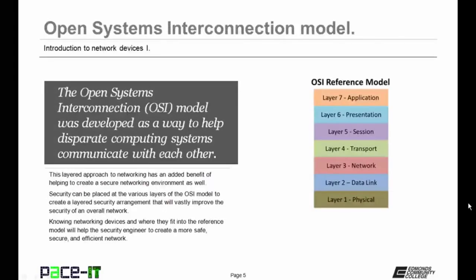The Open Systems Interconnection Model, or the OSI model, was developed as a way to help disparate computing systems communicate with each other. It created a seven-layer approach to networking. This layered approach not only allows those disparate systems to communicate with each other, but it has the added benefit of helping to create a secure networking environment as well. Security can be placed at the various levels of the OSI model to create a layered security arrangement that will vastly improve the security of an overall network. Knowing networking devices and where they fit into the reference model will help the security engineer to create a more safe, secure, and efficient network.